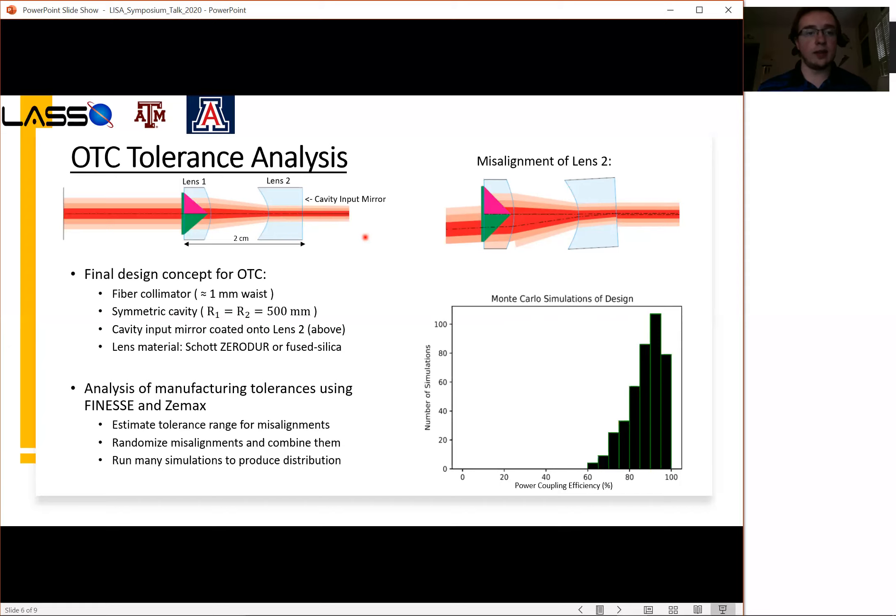Once we have this idea for a final design concept, we wanted to go into a tolerance analysis. The way that we would do this is by estimating a tolerance range for various misalignments throughout the system. Once we have a tolerance range for each of the misalignments and mismatches that we want to analyze, we randomize these parameters and combine them, then run many simulations in this way to produce a distribution in terms of the power coupling efficiency. The distribution from this analysis is shown here on the bottom right.